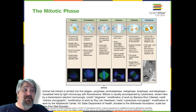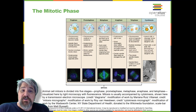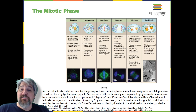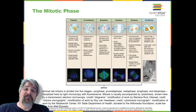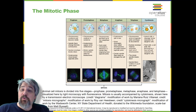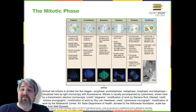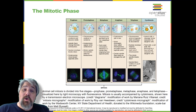During prophase, the first phase, several events must occur to provide access to the chromosomes in the nucleus. The nuclear envelope starts to break into small vesicles, and the Golgi apparatus and endoplasmic reticulum fragment and disperse to the periphery of the cell. The nucleolus disappears. The centrosomes begin to move to opposite poles of the cell. The microtubules that form the basis of the mitotic spindle extend between the centrosomes, pushing them farther apart as the microtubule fibers lengthen. The sister chromatids begin to coil more tightly and become visible under a light microscope.